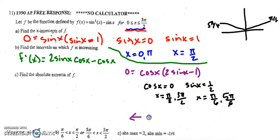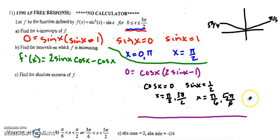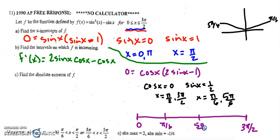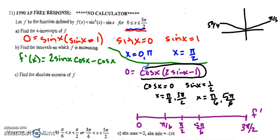Now we need to do a number line analysis. The number line starts at zero and ends at three pi over two, since we have a closed domain. The critical points placed in between are at pi over six, pi over two, and five pi over six. Note that three pi over two is already an endpoint. That gives us four intervals. The derivative in factored form is cosine x times (2 sine x minus 1).